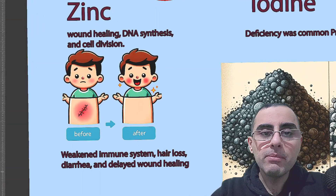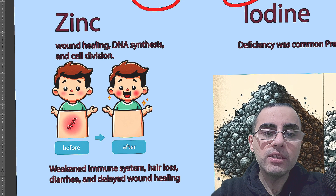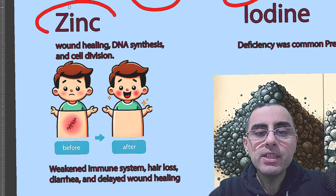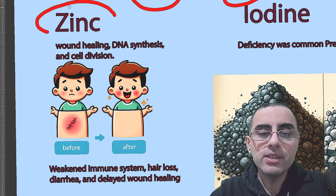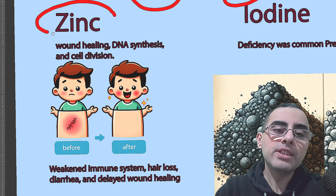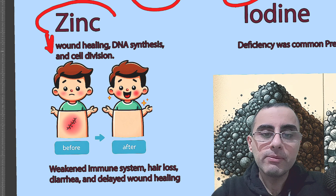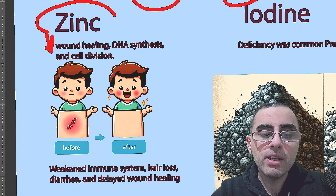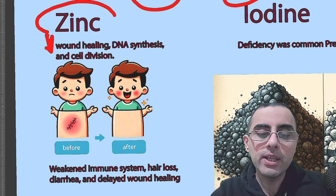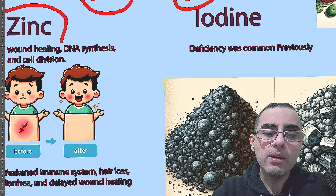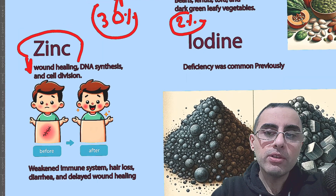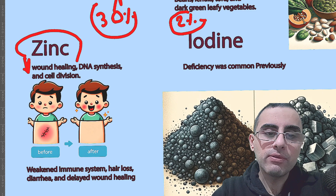Another mineral with common deficiency is zinc. Zinc is important for wound healing, DNA synthesis, and cell division, making it very important for the immune system. Zinc deficiency can result in a weakened immune system, hair loss, diarrhea, and delayed wound healing. Zinc intake is also possible through supplements, and nuts also contain a lot of zinc.